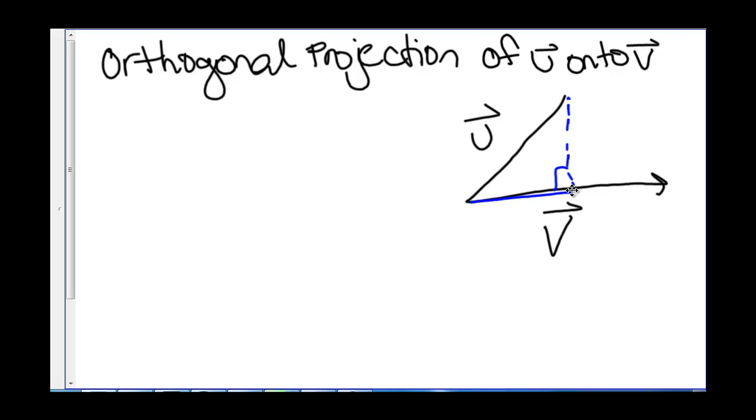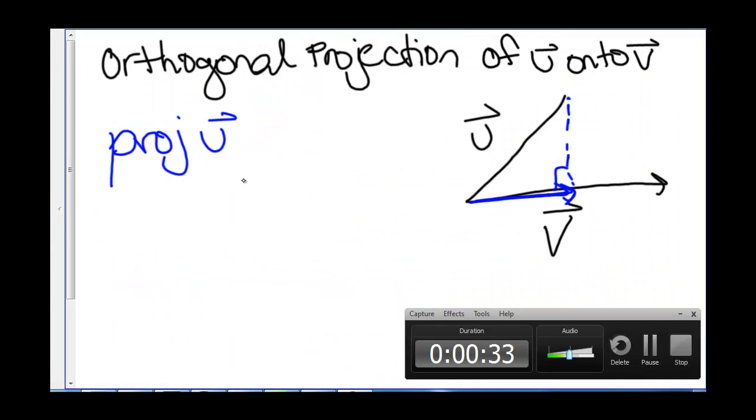And then this right here, this blue vector, that is the projection of u onto v. And this is how we denote that.